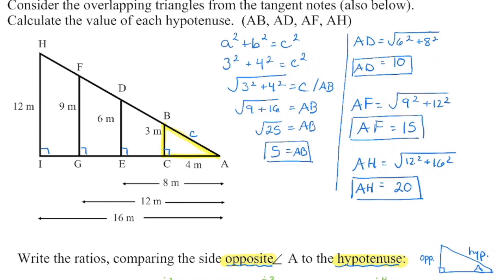For the first one, looking at my smallest triangle, the two side lengths I'm going to add together are the three and the four. We're looking for that value of C. I went through and detailed the steps to solve that, and then sped up the process for the three remaining hypotenuses.